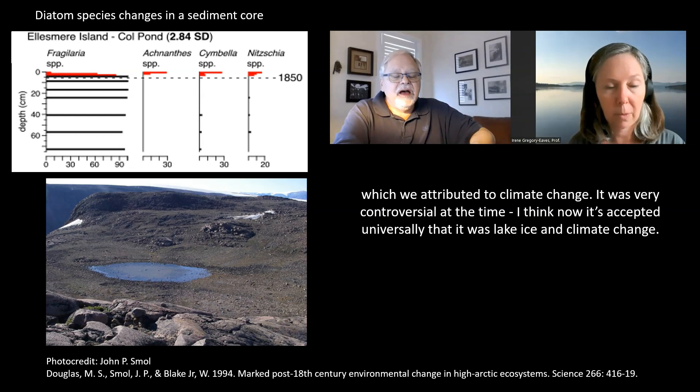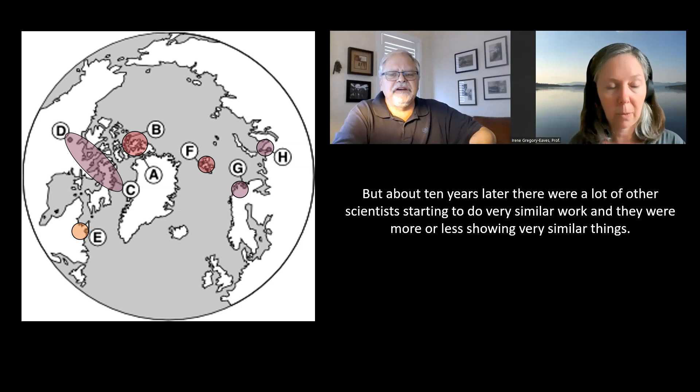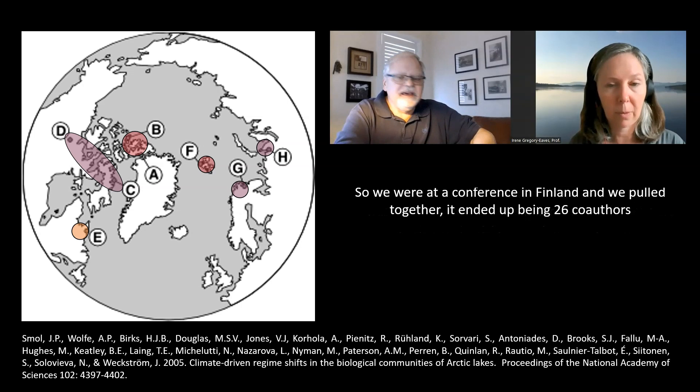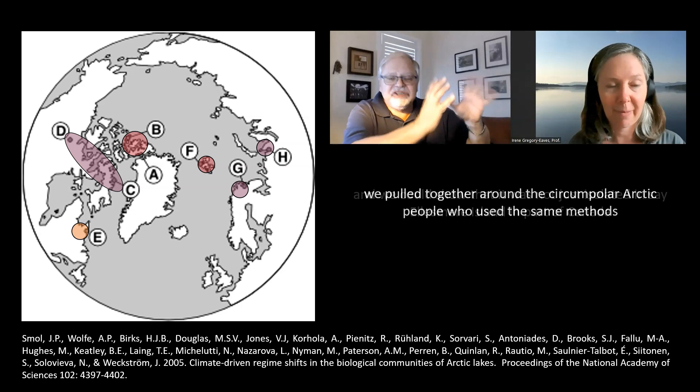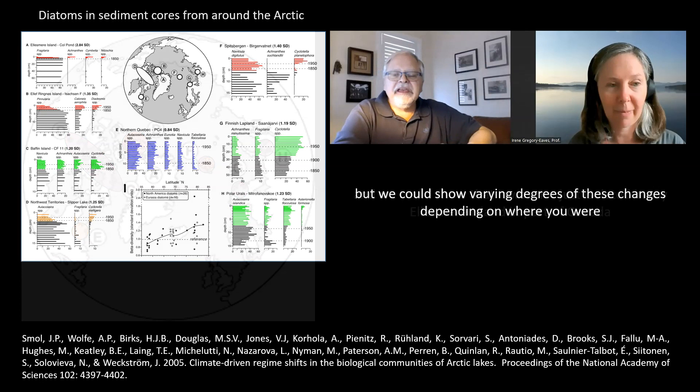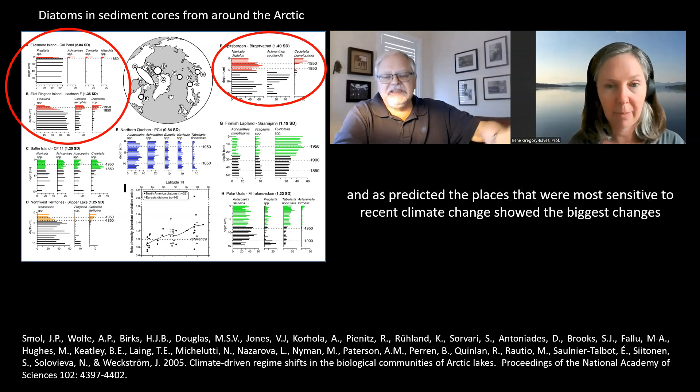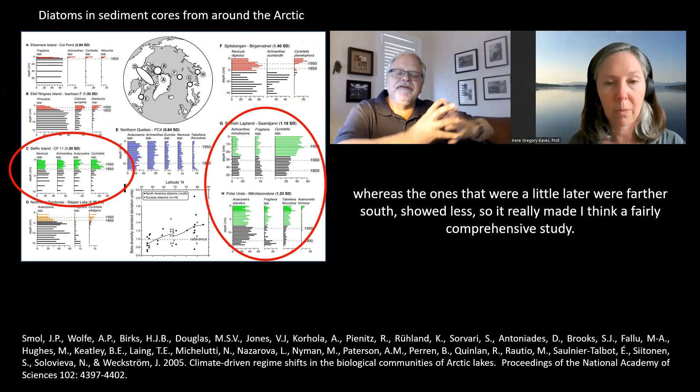By about 10 years later, there were a lot of other scientists doing very similar work and showing very similar things. We were at a conference in Finland and pulled together — it ended up being 26 co-authors from around the circumpolar Arctic — people who used the same methods. We could show that changes were not just isolated on Ellesmere Island, but varied in degree depending on location. As predicted, the places most sensitive to recent climate change showed the biggest changes, whereas those farther south showed less and later changes.